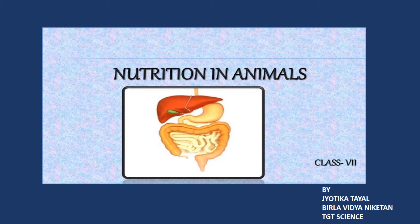The stomach is a thick-walled, large, U-shaped structure that connects the food pipe to the small intestine. The inner lining of the stomach produces a secretion called gastric juice, which contains mucus, hydrochloric acid, and enzymes.